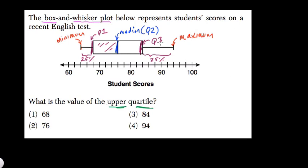Now, the upper quartile is another name for the third quartile, and that's this number right here. Here's 80 and 90, 82, 84, 86, 88, this is 84. So the upper quartile is 84.